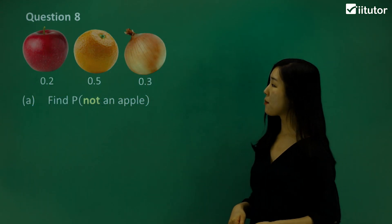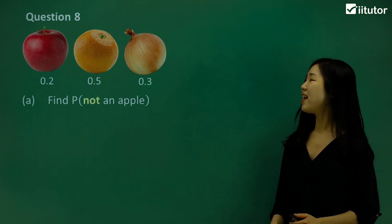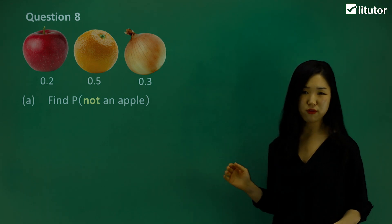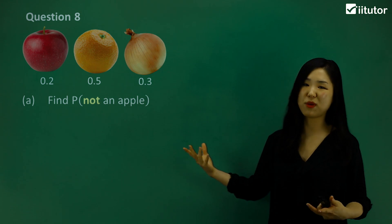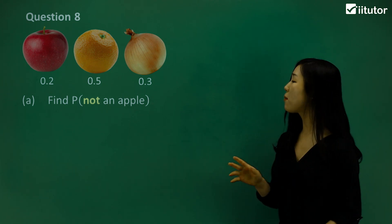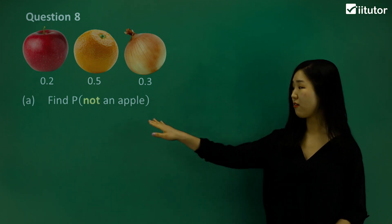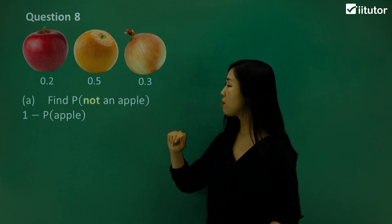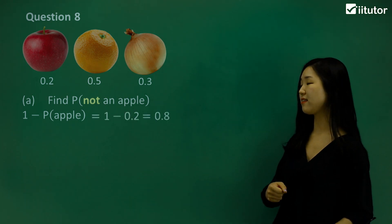Question 8: I've got some fruits and vegetables — an apple, an orange, and an onion. Those values are the probabilities of each item. The probability of being an apple is 0.2, an orange is 0.5, and an onion is 0.3. Part A: find the probability of not an apple. Not an apple is the complementary event of an apple, so we do 1 minus the probability of an apple. 1 minus 0.2 equals 0.8. That's the answer.